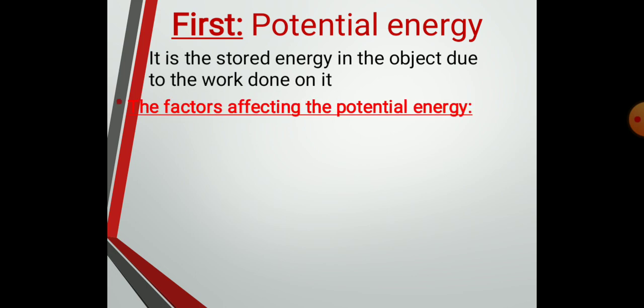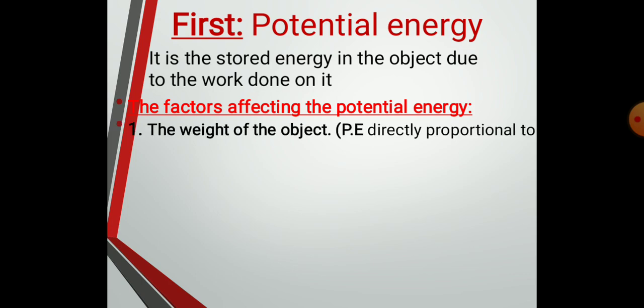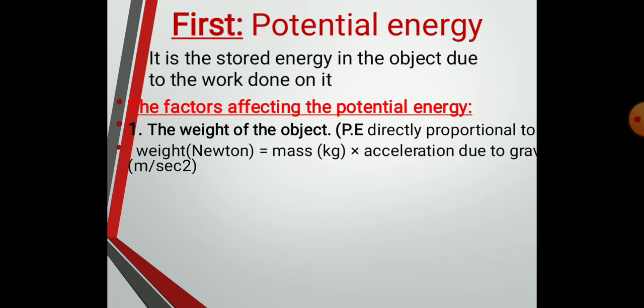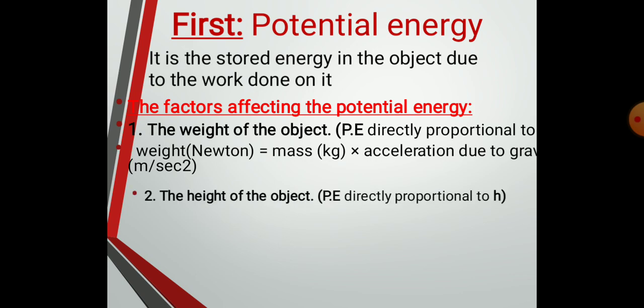We'll start with potential energy. It is the stored energy in an object due to the work done on it. The factors affecting potential energy are: number one, the weight of the object — weight equals mass times acceleration due to gravity — and number two, the height of the object. Don't forget that the acceleration due to gravity equals 9.8 or 10 meters per second squared.